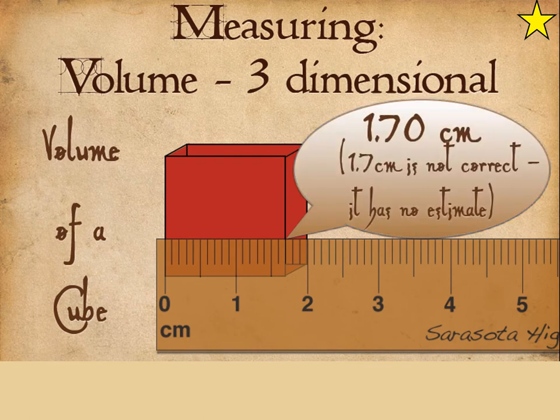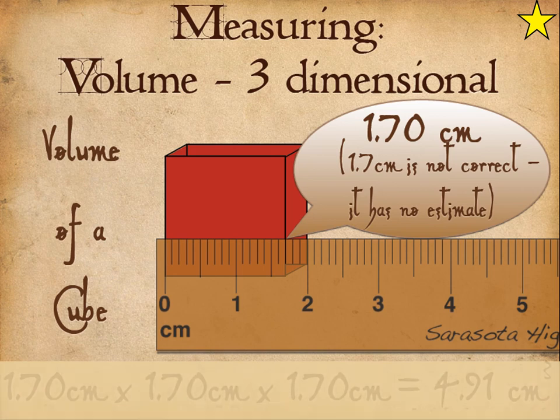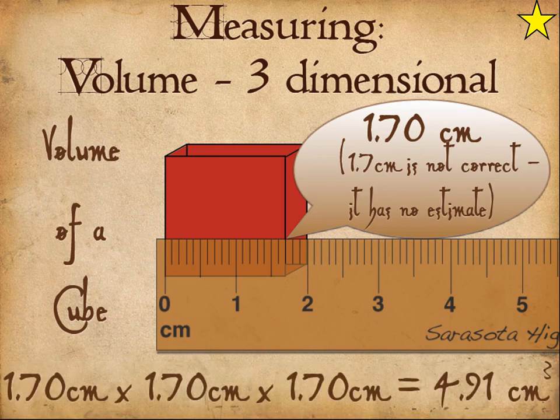So remembering that if it's right on the line, you have to make sure you add an extra digit to make sure you have enough significant figures. That's important to understand. So if it's exactly 1.7, you need to put a zero there to make an estimate. So 1.7 cubed is 4.91.